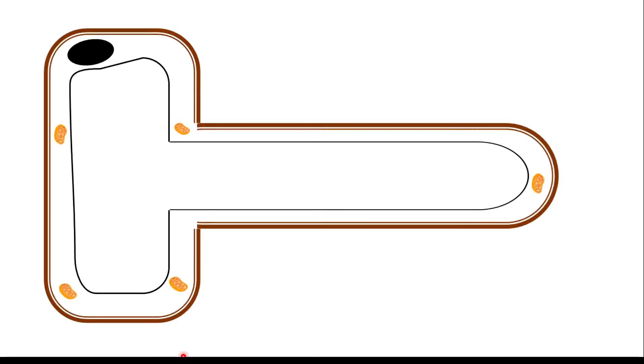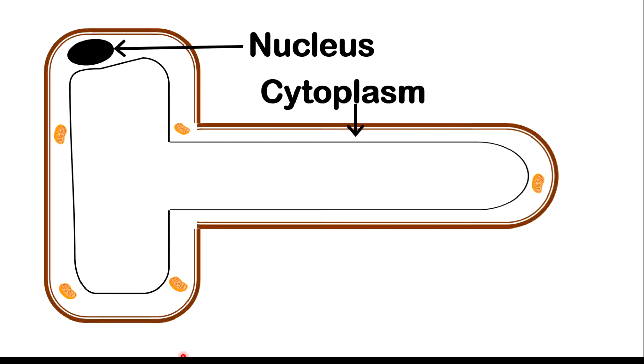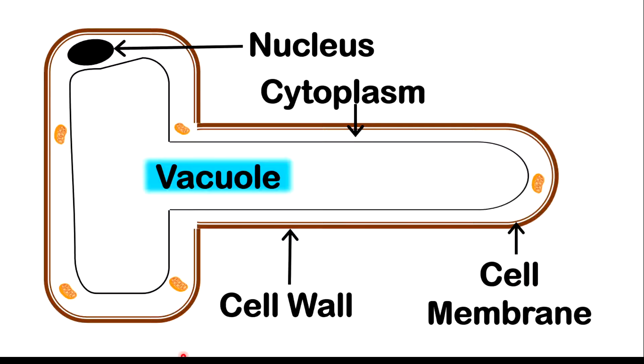This is representing a root hair cell. Just like any other cells within the plant, a root hair cell contains a nucleus, cytoplasm, a large vacuole which I will be discussing later, a cell wall, a cell membrane, and many mitochondria, which I will also be discussing later.